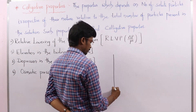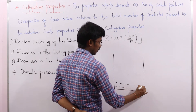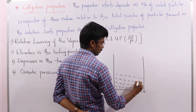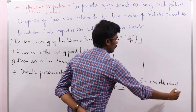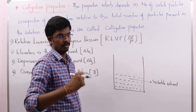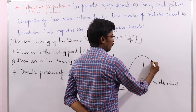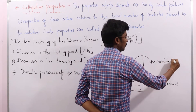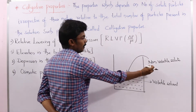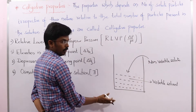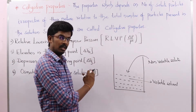Generally when we study Vapor Pressure of Solution, we deal with a solution which contains a Volatile Solvent. Now the solution I am taking with respect to the pure solvent — a Volatile Solvent, which is nothing but a pure solvent. Pure solvent usually contains more Vapor Pressure when compared to the solution. When I add a non-volatile solute to that Volatile Solvent, the Vapor Pressure will decrease.